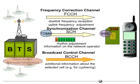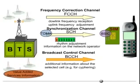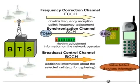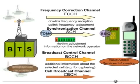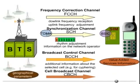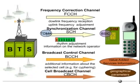For some value-added services, for example location-dependent services, additional information has to be transmitted from the BTS to the mobile. The cell broadcast channel, CBCH, is used for this purpose to transmit geographical parameters, for example the Gauss-Kruger coordinates of the BTS, to the mobile.